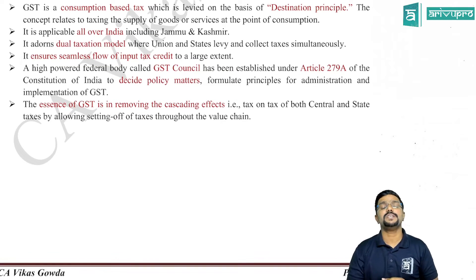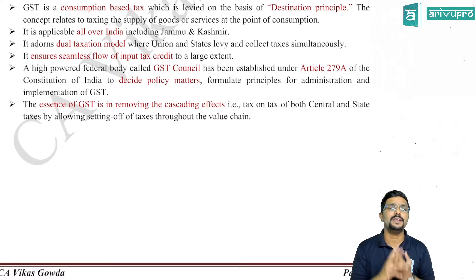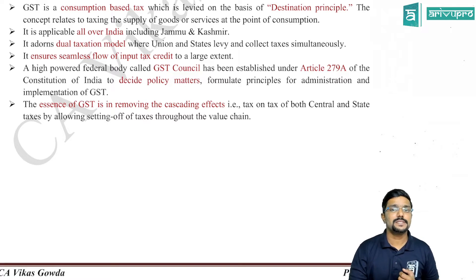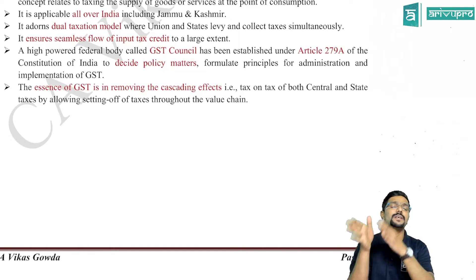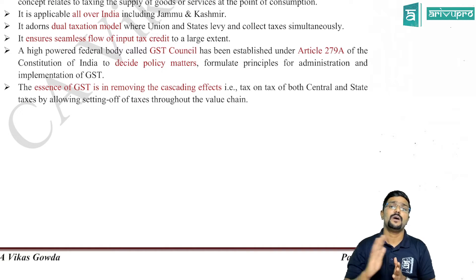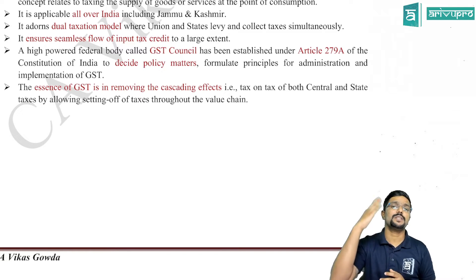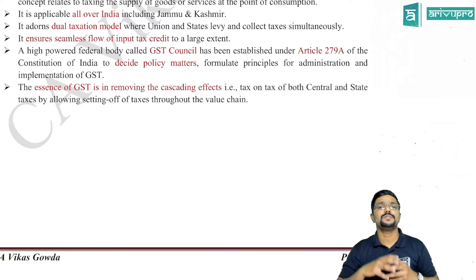A high-powered federal body called the GST Council was established by the President. It takes decisions with respect to GST. The GST Council meetings are conducted, decisions are taken, and recommendations are sent to the government, which officially notifies them. The essence of GST is to remove the cascading effect — that is, tax on tax. Previously, multiple taxes were levied on the same goods at different points, and if the person could not claim credit, it became part of the cost, pushing up prices ultimately suffered by the consumer.